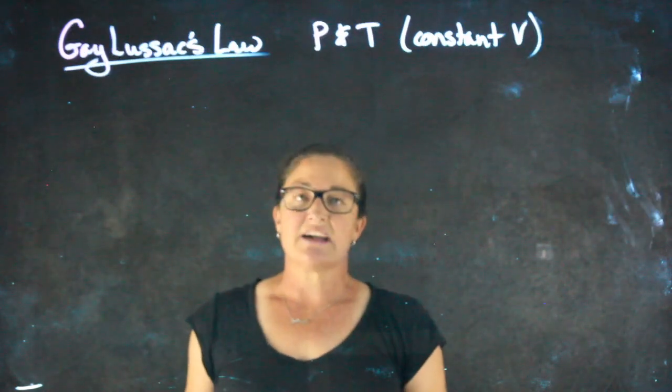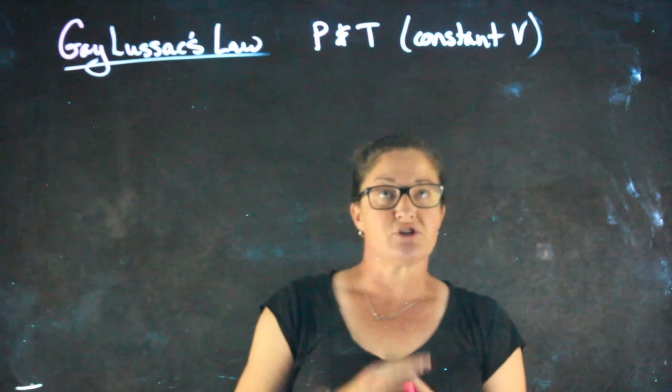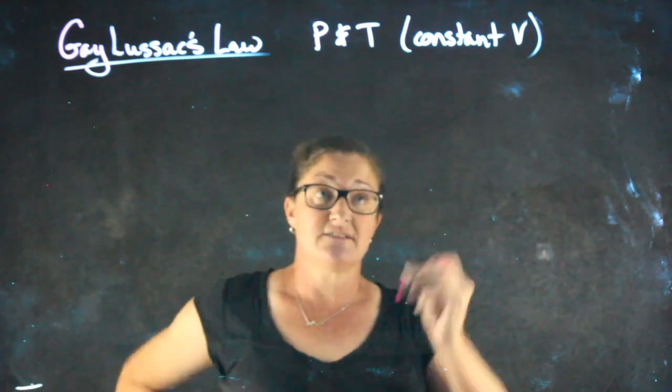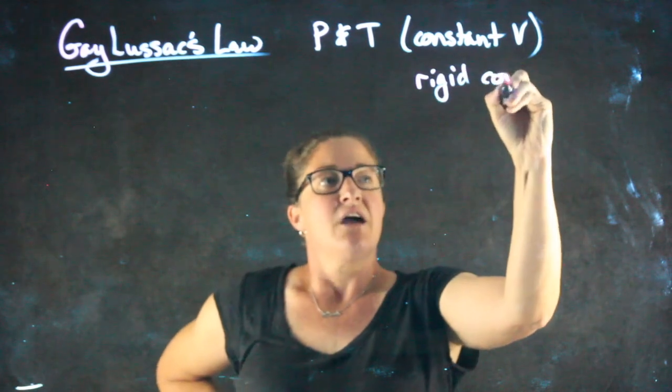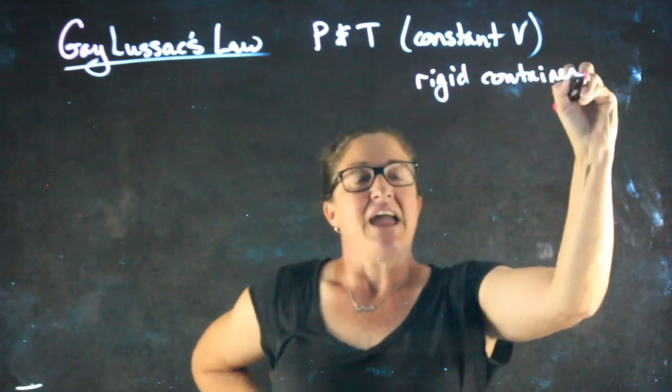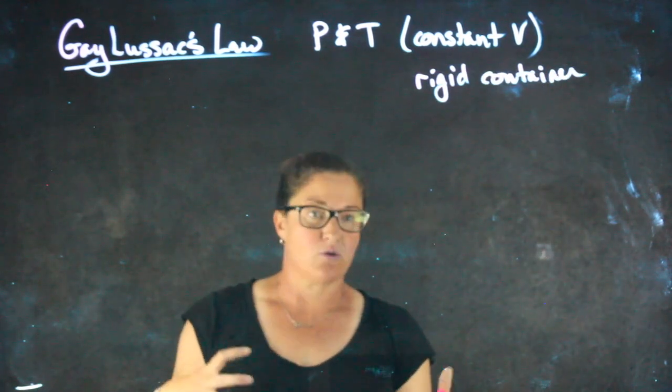The third gas law, Gay-Lussac's law, relates pressure and temperature using a container of constant volume. So this is some sort of rigid container. A good example would be a steel can of spray paint or something like that.